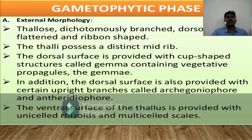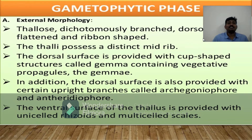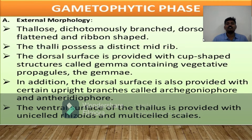The dominant phase of Marchantia is the gametophytic phase. When we observe the external morphology of Marchantia, the thallus is dichotomously branched, dorsiventral, and ribbon-shaped. The thallus possesses a distinct midrib. The dorsal surface is provided with cup-shaped structures called gemma cups, containing vegetative propagules called gemmae. In addition, the dorsal surface is also provided with certain upright branches called archegoniophores and antheridiophores. The ventral surface is provided with unicellular rhizoids and multicellular scales.